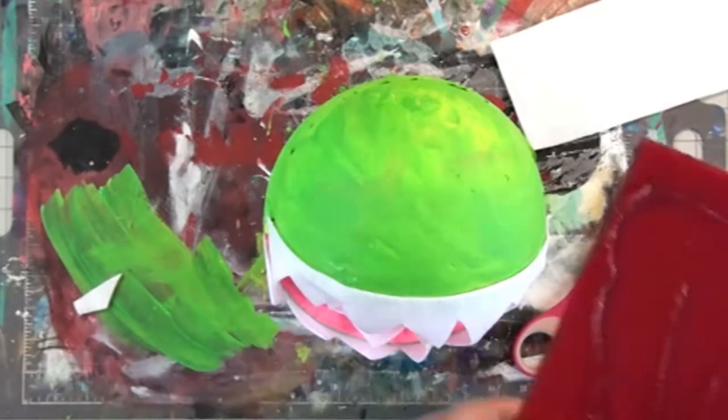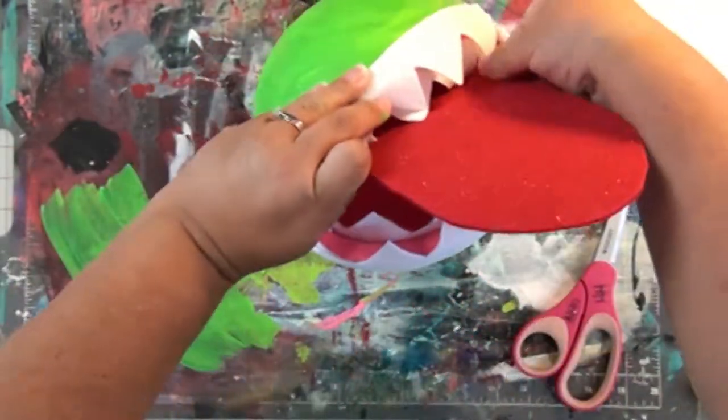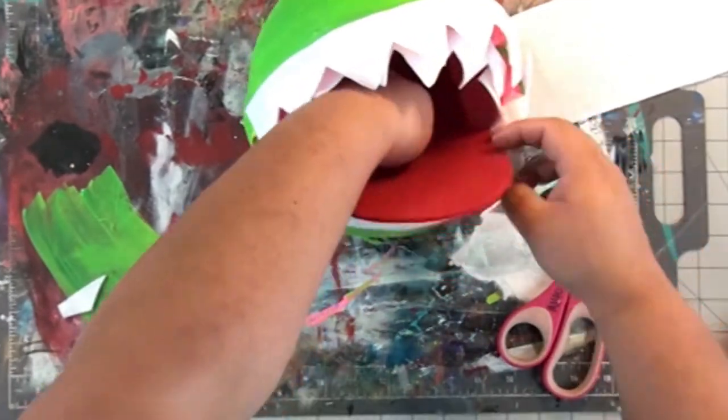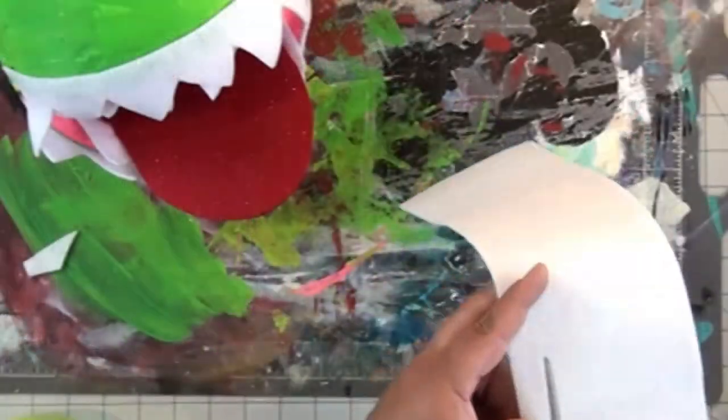So before I make the lips I'm going to go ahead and hot glue the tongue. Now if I was doing this over again, I would put the tongue in first and then just stick the glue gun inside and squirt some glue in there because I did end up burning my finger.